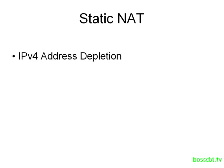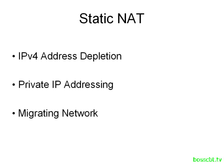As a quick summary, IP version 4 address depletion has been occurring for quite some time, and at this point we're pretty much out of IPv4 addresses. NAT was introduced to alleviate that problem, and it did a great job. They also introduced the concept of private IP addressing, which helped out a lot in terms of preserving IP version 4 addresses.